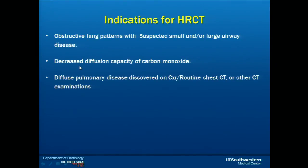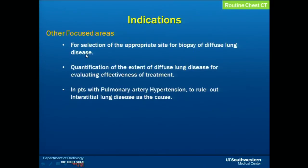Patients who have decreased diffusion capacity of carbon monoxide and diffuse pulmonary diseases discovered on a routine chest x-ray, routine non-contrast or contrast-enhanced chest CT, or even other CT exams like body CT where you get images of the lung bases. Additional indications include selecting an appropriate site for biopsy of diffuse lung diseases, quantifying the extent of diffuse lung diseases, evaluating effectiveness of treatment, and in patients with pulmonary artery hypertension to rule out interstitial lung disease as a cause.